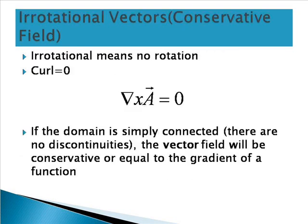Next we are going to see what irrotational vectors are. From the name itself we can understand: irrotational means there is no rotation. If there is no rotation, then definitely the curl value will be equal to zero. So, del cross A-vector equals zero. If the domain is simply connected, the vector field will be conservative, or equal to the gradient of a scalar function.